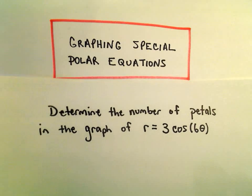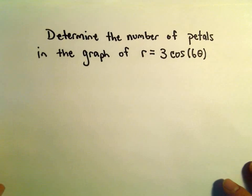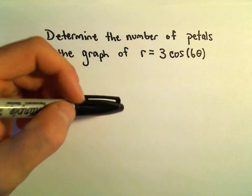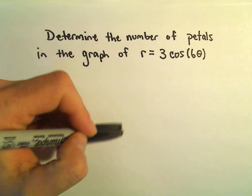Alright, so kind of a quick question here about determining the number of petals in the graph of r equals 3 cosine of 6 theta. And if you were to graph this, you would see it ends up looking kind of like a little flower.